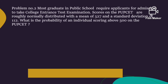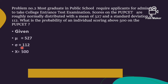Problem number two: Most graduates in public schools require applicants to take college entrance examinations. Scores on the PUP college entrance test are roughly normally distributed with a mean of 527 and a standard deviation of 102. What is the probability that an individual scores above 500 on the PUP entrance test? Given: probability mean μ = 527, standard deviation σ = 100, and X = 500.